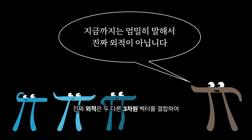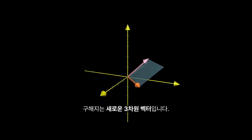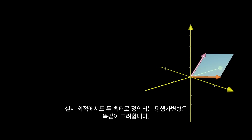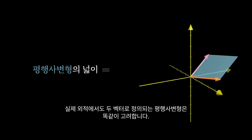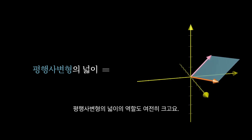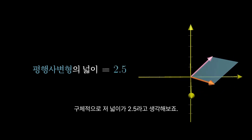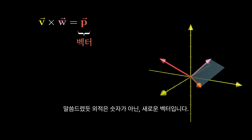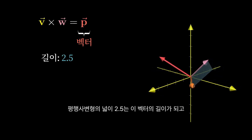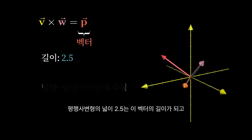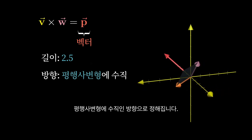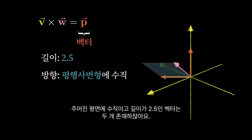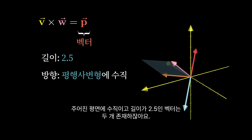The true cross product is something that combines two different 3D vectors to get a new 3D vector. Just as before, we're still going to consider the parallelogram defined by the two vectors that we're crossing together, and the area of this parallelogram is still going to play a big role. To be concrete, let's say that the area is 2.5 for the vectors shown here. But the cross product is not a number — it's a vector. This new vector's length will be the area of that parallelogram, which in this case is 2.5. And the direction of that new vector is going to be perpendicular to the parallelogram. But which way? There are two possible vectors with length 2.5 that are perpendicular to a given plane.